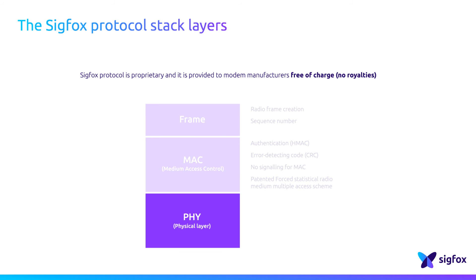Lastly, the physical layer determines how the SIGFOX signals are going to be synthesized. First, it concerns modulation: DBPSK in uplink and GFSK in downlink. The bitrate is 100 bps or 600 bps depending on the operation region. The transmission power reaches, for example, a maximum of 14 dBm in European countries or 22 dBm in North and South America.